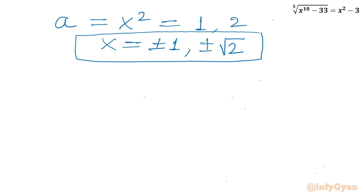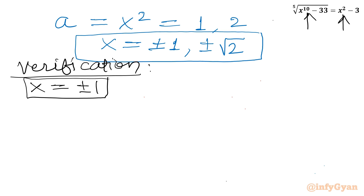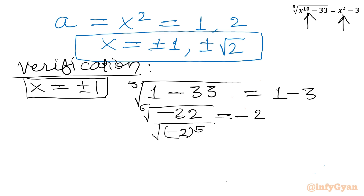Let us verify. For x equals ±1: since powers are even, x to the power 10 equals 1 and x squared equals 1 always. LHS: 5th root of (1 minus 33) = 5th root of minus 32 = 5th root of (minus 2)⁵ = minus 2. RHS: 1 minus 3 equals minus 2. LHS equals RHS, so verified.